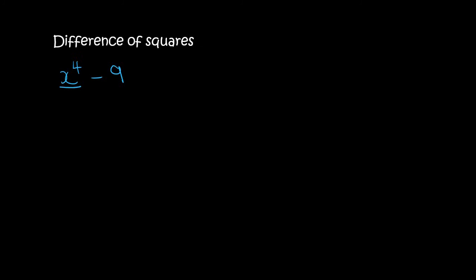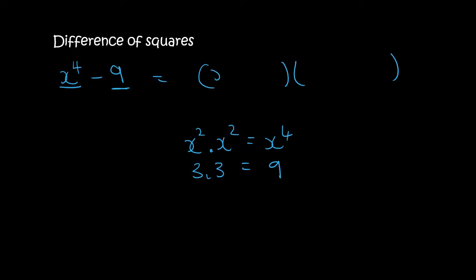x⁴ is a square number because x² times x² gives you x⁴. 9 is a square number because 3 times 3 is 9. So what we do is open up our brackets, put x² and x², then 3 and 3 — one gets a plus, one gets a minus. It doesn't matter which way around you do that.